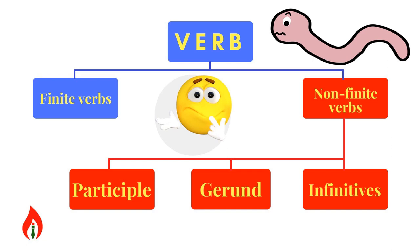Based on this knowledge, we can divide verbs into two parts — finite verbs and non-finite verbs. The non-finite verbs are further divided into three different kinds: participle, gerund, and infinitives. We shall deal with each of these topics in detail in this video lesson.